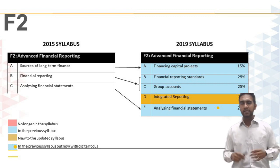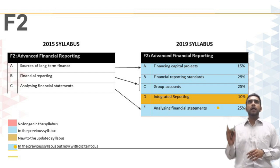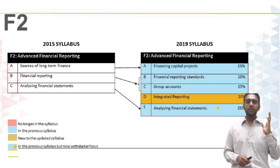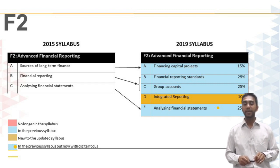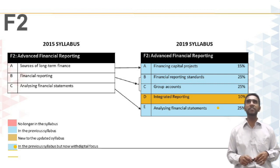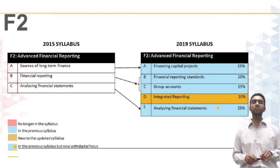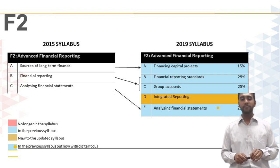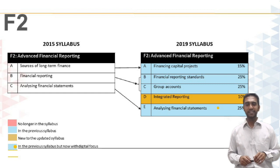Group accounts is now a separate topic worth 25% of your syllabus. Analyzing financial statements has remained, but with a slight digital spin as data analytics is coming into that topic as well. Finally, there is a new topic that has been moved down from F3: syllabus topic D, integrated reporting. This covers things like the global reporting initiative, integrated reporting, and similar frameworks.